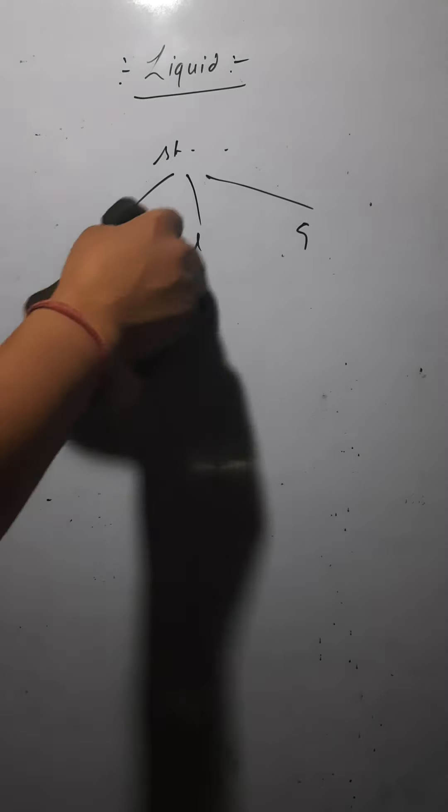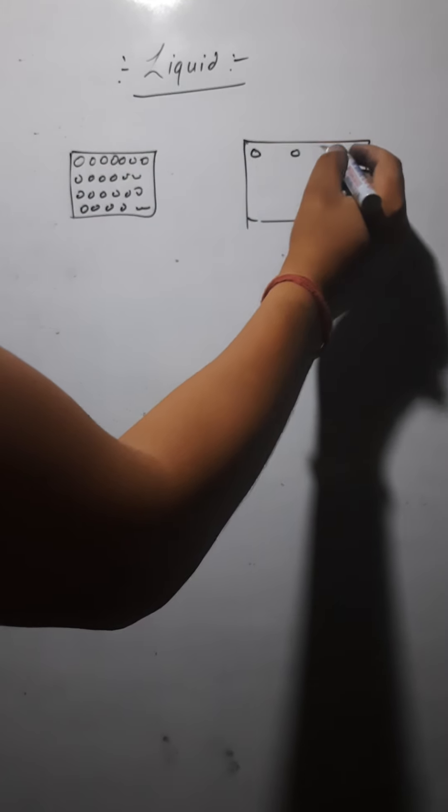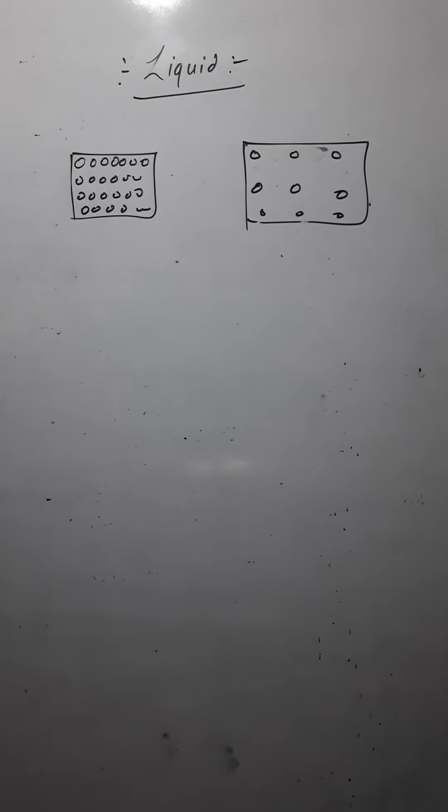Suppose we are taking a solid and we are taking a liquid. What is the basic difference? The particles are very close to each other in case of solids. But in case of liquids, the particles are having some distance between them. So can you guess the possibilities? In case of solids, the particles were very near.